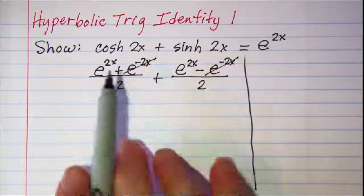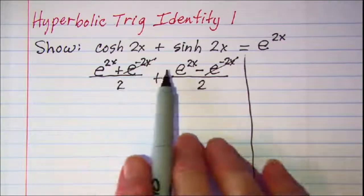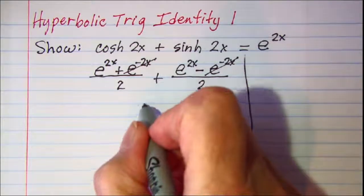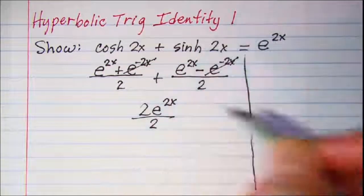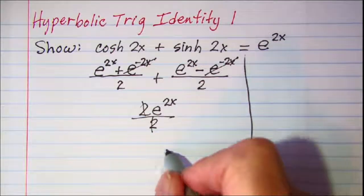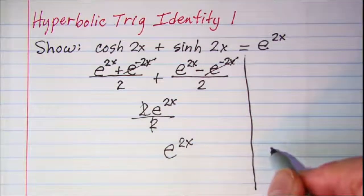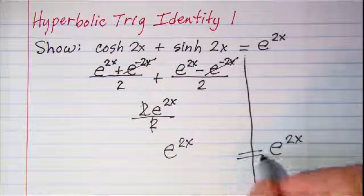When I add, I have 1e to the 2x plus 1e to the 2x, that is 2e to the 2x divided by 2. And these 2s will cancel so I have e to the 2x on the left side and e to the 2x on the right side, and those are equal.